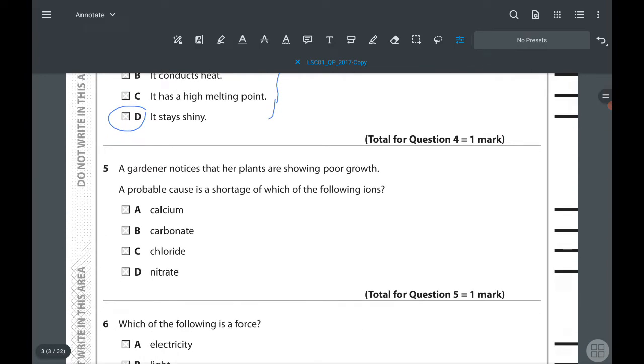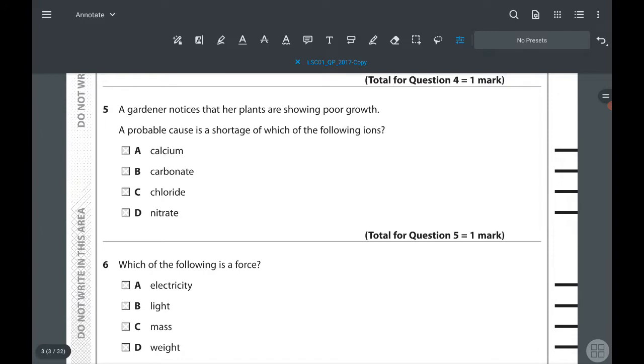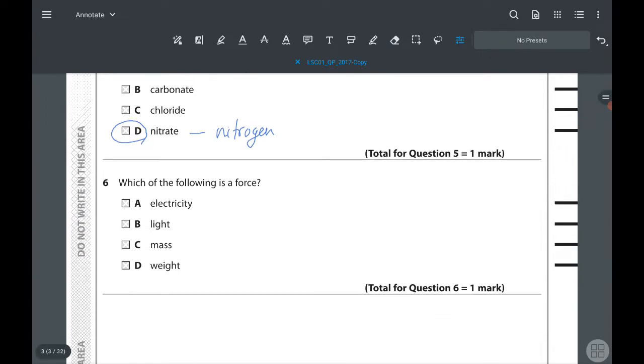Fifth question: a gardener notices that plants are showing poor growth. A probable cause is a shortage of ions. We've learned about nitrogen, magnesium, phosphorus, and potassium. Nitrogen is required for protein synthesis. If proteins are not there, plant growth will not happen. So the answer is D - nitrate, where nitrogen is available.